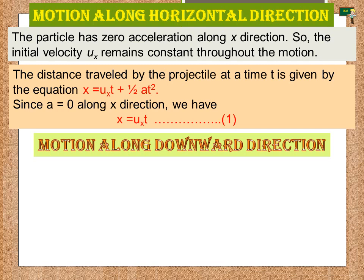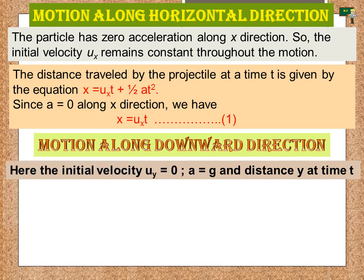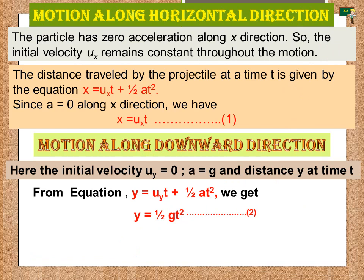We can apply the kinematic equations along the x and y directions separately since this is two-dimensional motion, and the velocity has both a horizontal component ux and a vertical component uy. For the downward direction, the initial vertical velocity uy = 0 and a = g. The distance y at time t is given by y = uyt + ½at², which gives y = ½gt².